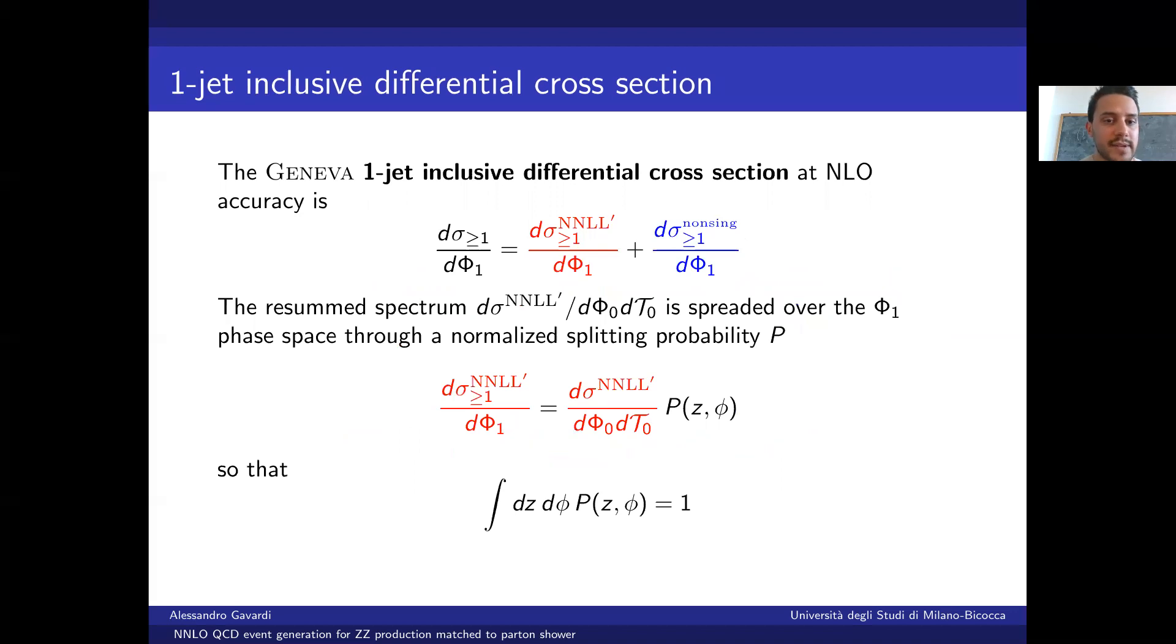A similar reasoning applies for the one-jet inclusive differential cross section, but this time we have to deal with the fact that the resummed contribution to this cross section is only differential in tau0. So we need to multiply it by a normalized splitting probability p, which will give it the dependence on the two additional parameters, z and phi, that we need to parametrize the extra emission of the phase space phi1.